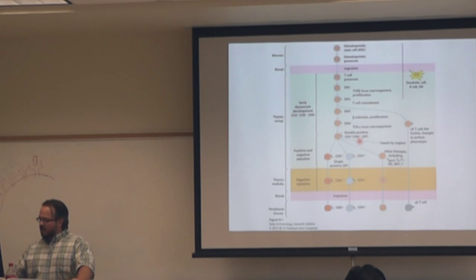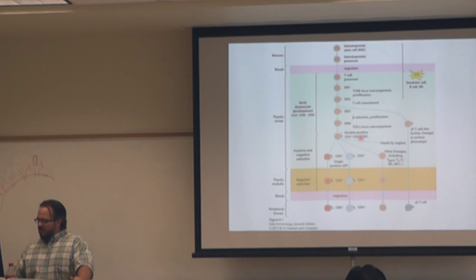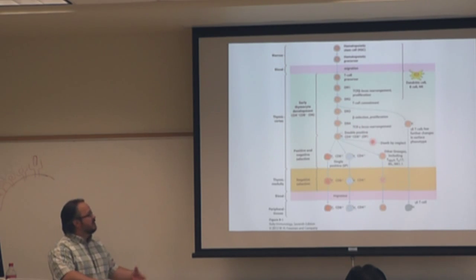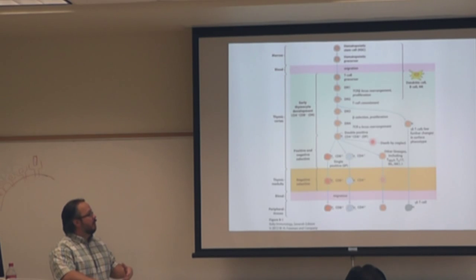We know that T cells will differentiate into beta or gamma delta lineages, and that plays a role in our ratios of alpha beta versus gamma delta T cells. We'll talk about when that doesn't apply early in life and some possible reasons for that. These cells go from a double negative to a double positive, and now they express both CD4 and CD8, and now they're going to undergo positive and negative selection.